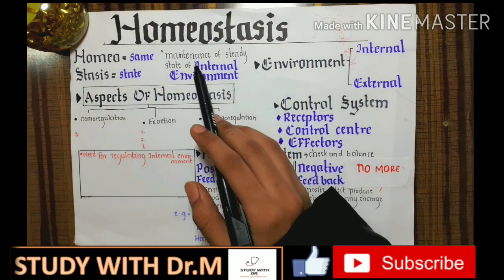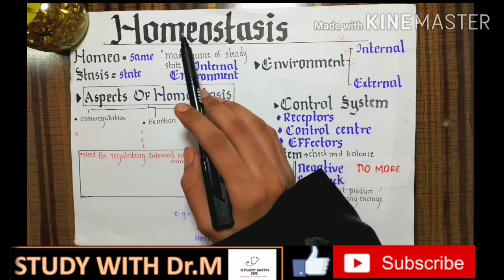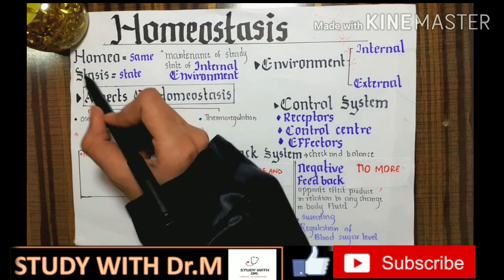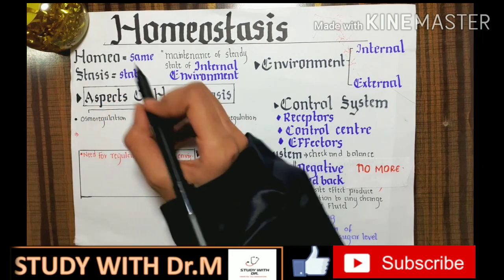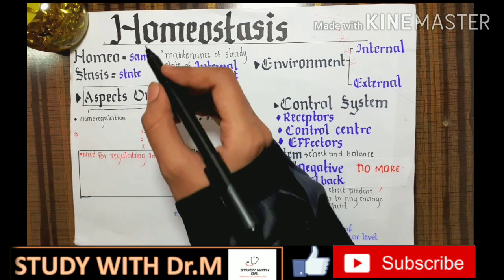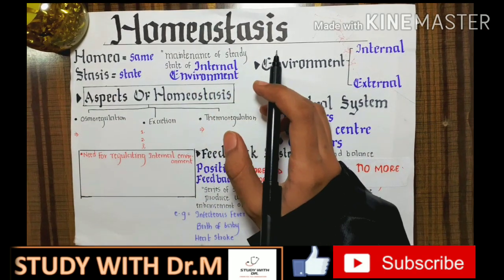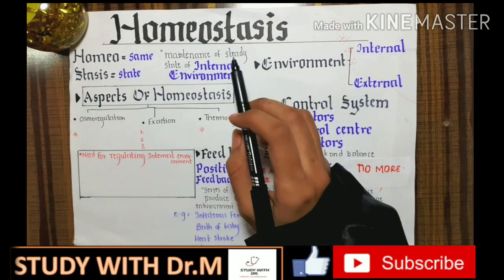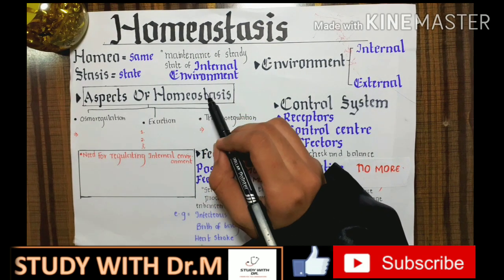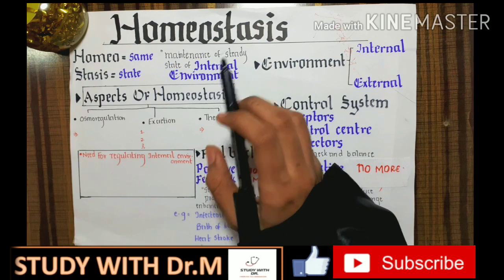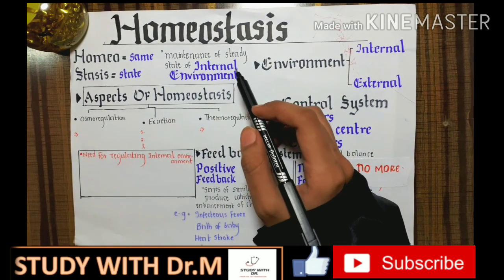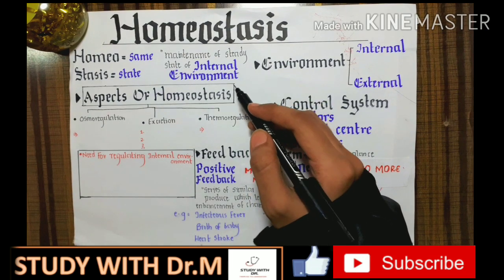First we have to know what the word homeostasis means. This word is derived from the Greek word — homeo means same and stasis means steady state, same state, constant state. The definition of homeostasis is the maintenance of the steady state of the internal environment. There are a set of regulatory mechanisms which are involved in maintaining the organism's internal environment.